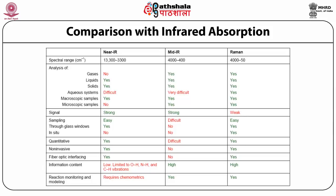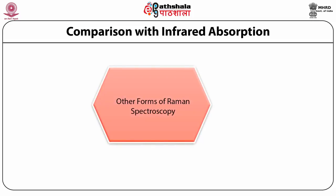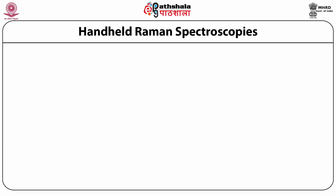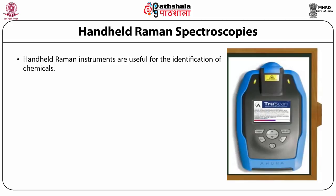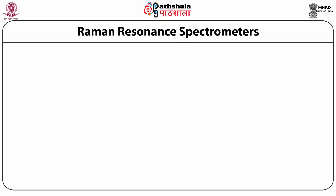A comparison with infrared absorption for various compounds has been shown in terms of near infrared, mid infrared, and Raman values. In other forms of Raman spectroscopy, there are different types including handheld Raman spectroscopy. Handheld Raman instruments are useful for identification of chemicals and are designed for safe use in manufacturing plant environments and for military and chemical weapon applications.